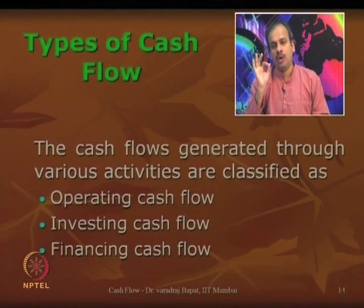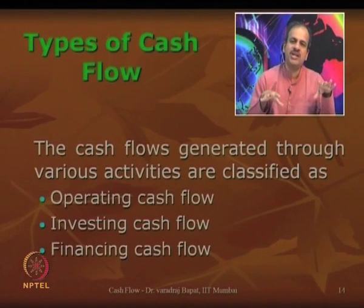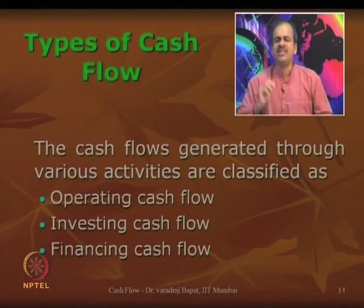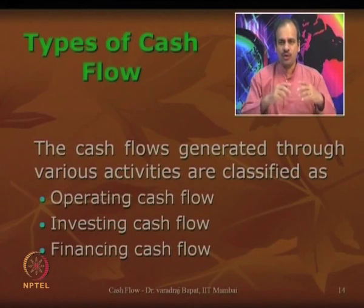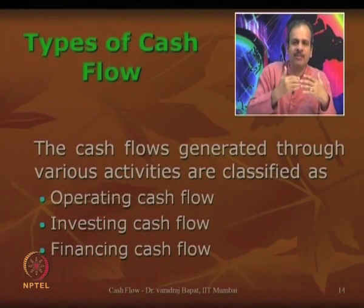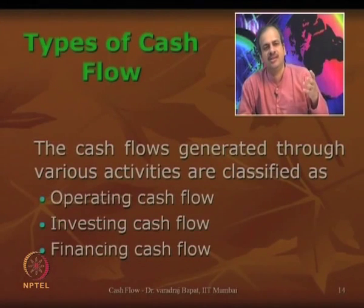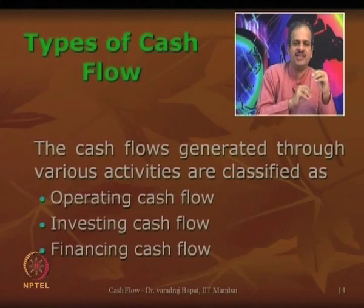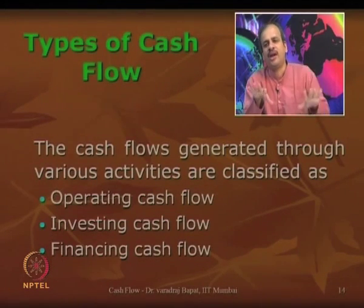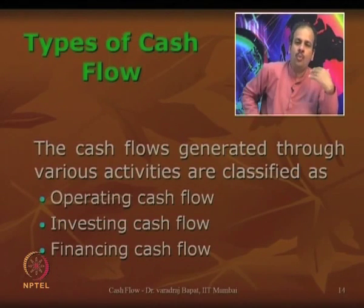A very important thing in the cash flow statement is the classification of activities. In any cash flow statement, all activities need to be classified into operating, investing, and financing. Why is this classification required? Because the cash flow statement is not just a list of all monies coming in and going out — users should also know where the money is coming from and what its impact on business will be. That is why GAAP has made 3 compulsory categories: operating, investing, and financing.